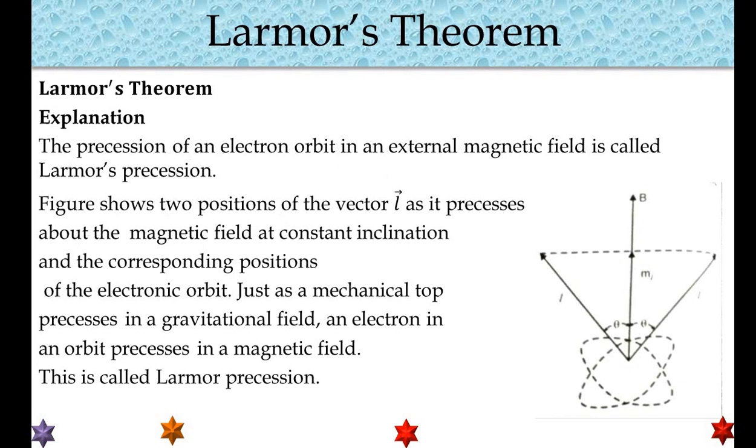The precession of an electron orbit in an external magnetic field is called Larmor's Precession. Figure shows two positions of the vector L as it precesses about the magnetic field at constant inclination and the corresponding positions of the electronic orbit. Just as a mechanical top precesses in a gravitational field, an electron in an orbit precesses in a magnetic field. This is called Larmor's Precession.